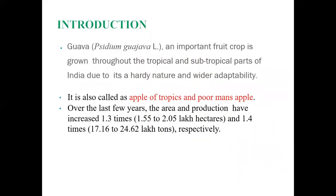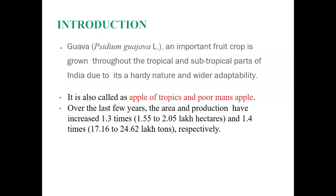Guava is an important crop grown throughout tropical and subtropical parts of India. Due to its hardy nature, it can be grown in different climatic conditions and is known as the 'apple of profits' and 'poor man's apple' because it provides many nutrients at low cost. In recent years, area under guava has increased one to three times and production one to four times in India.